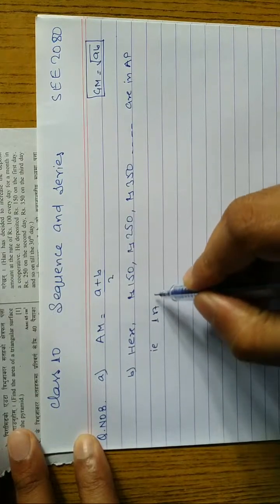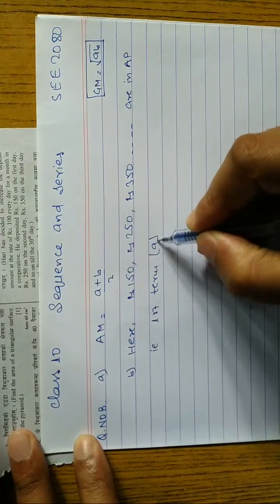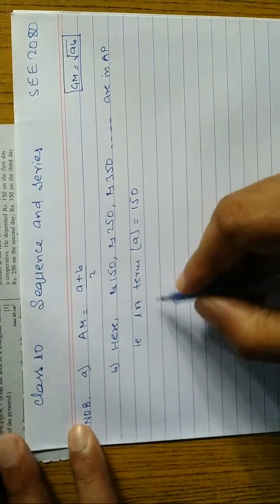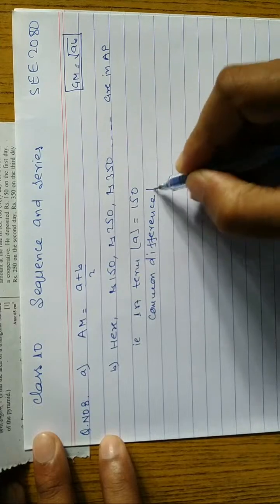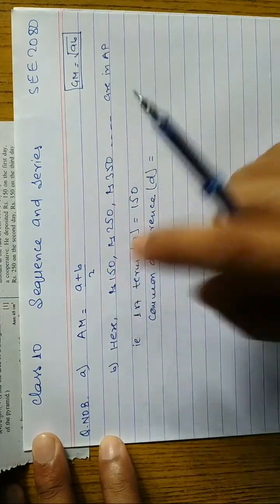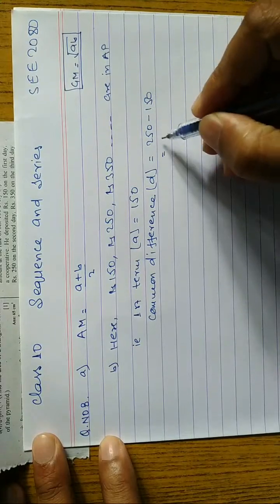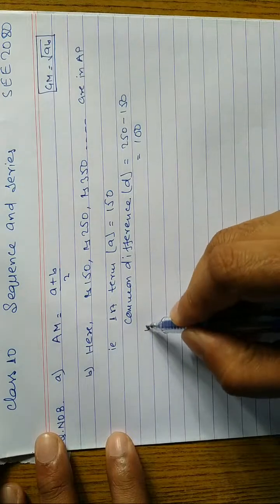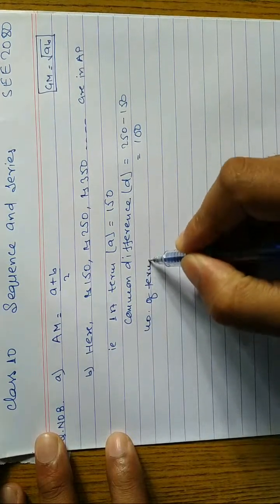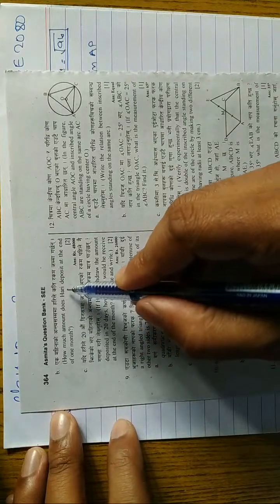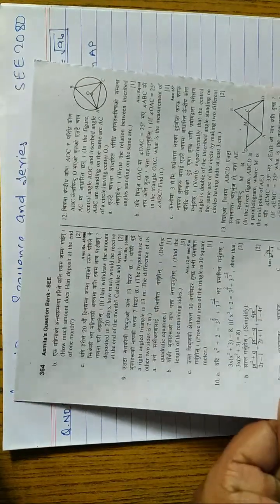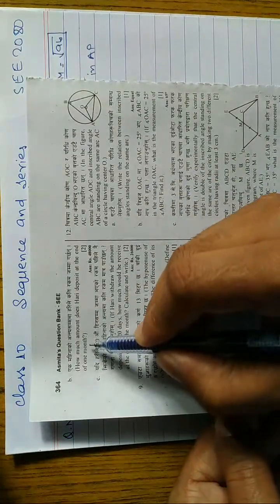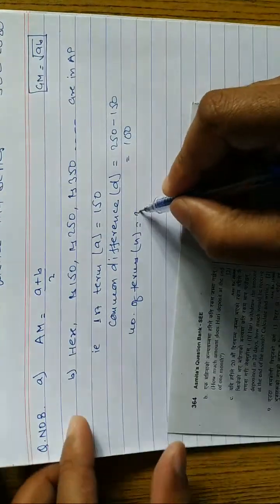What is the first term? The first term a is equal to 150 rupees. Common difference d is equal to 100. Number of terms n: one month has 30 days, so n is equal to 30.